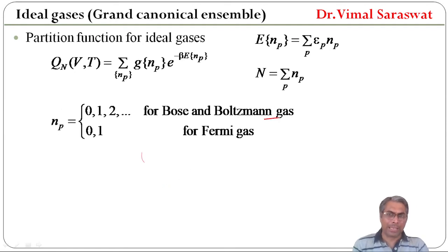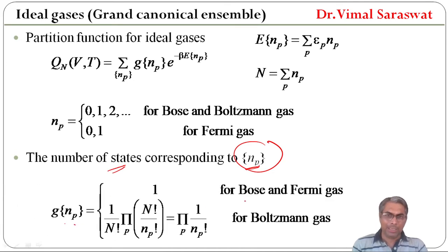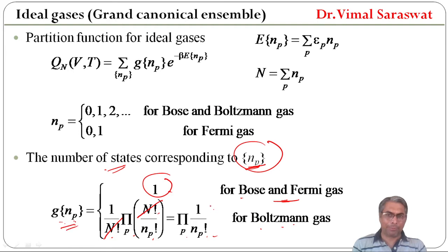For Bose and Boltzmann gas, np equals 0, 1, 2, 3 and so on. For Fermi gas, np equals 0 and 1 only. The number of states g(np) corresponding to occupation number np: for Bose and Fermi gas, g(np) equals 1. For Boltzmann gas, g(np) equals the product over p of 1 upon factorial np.